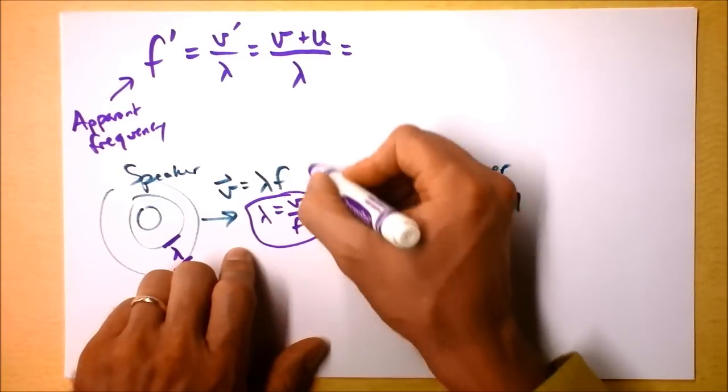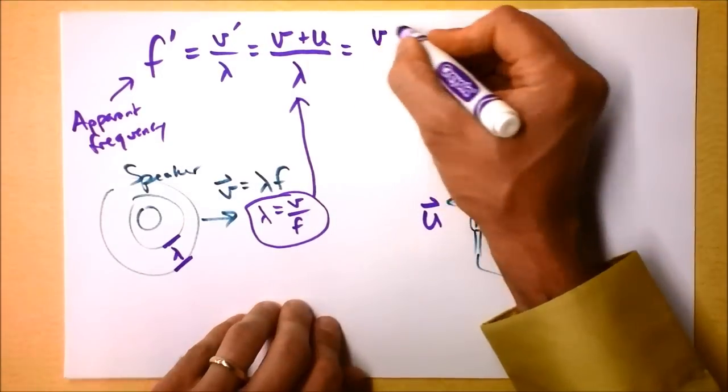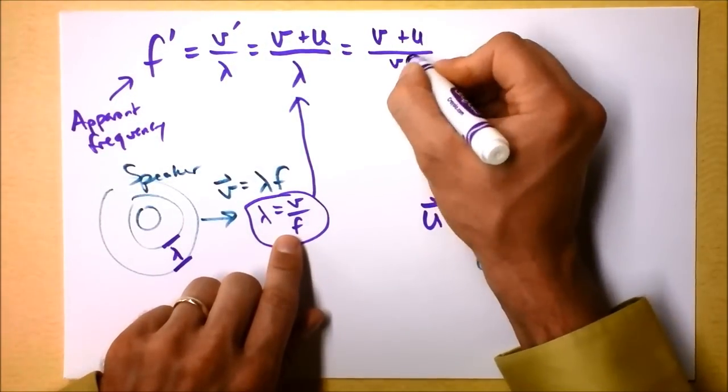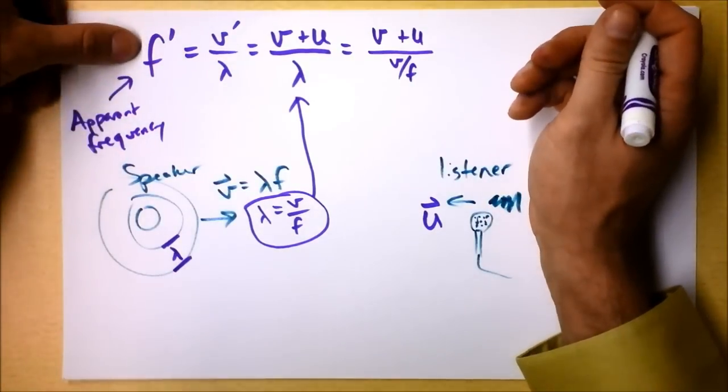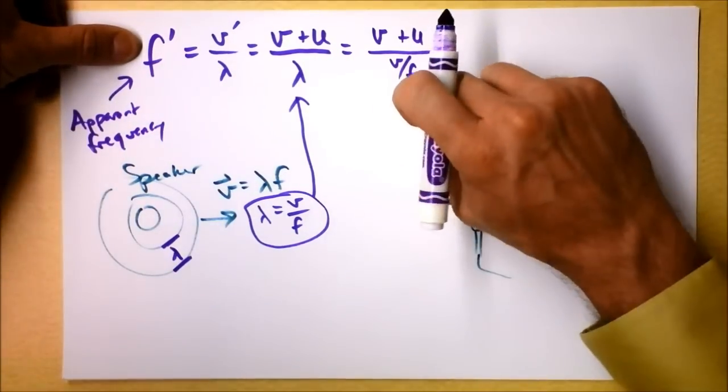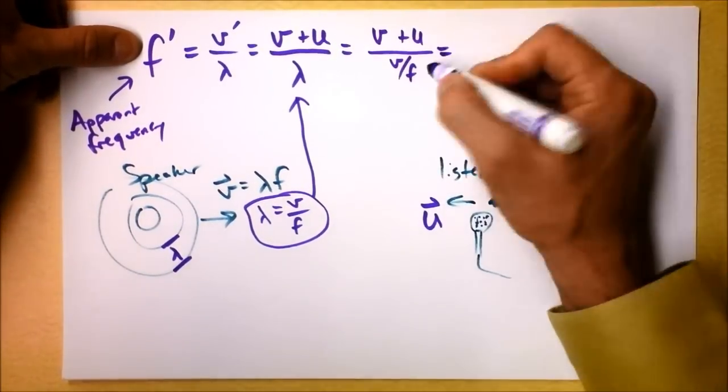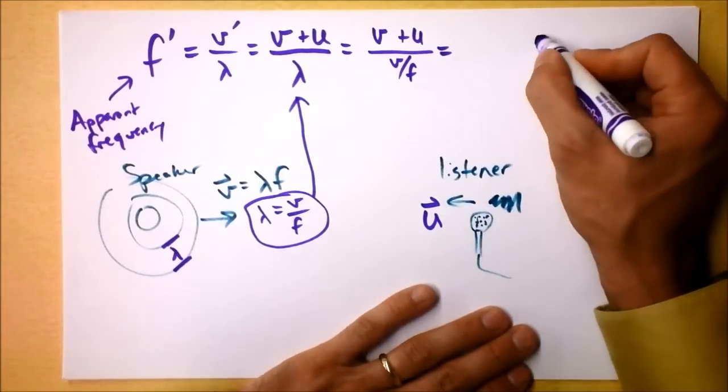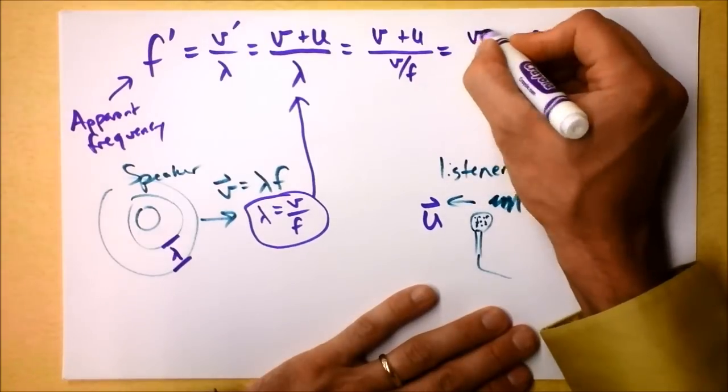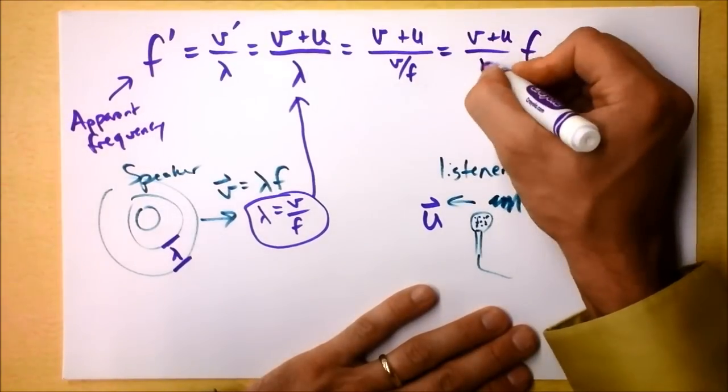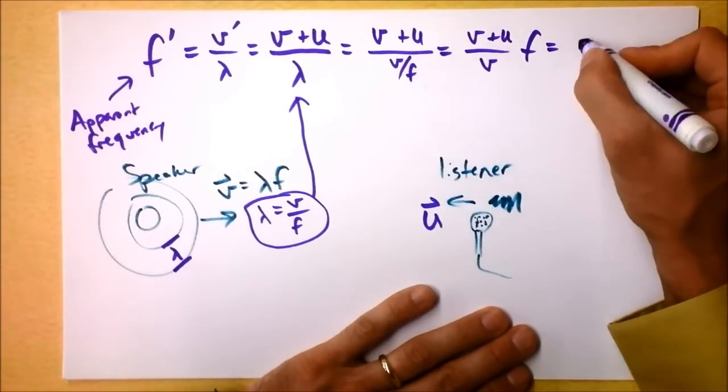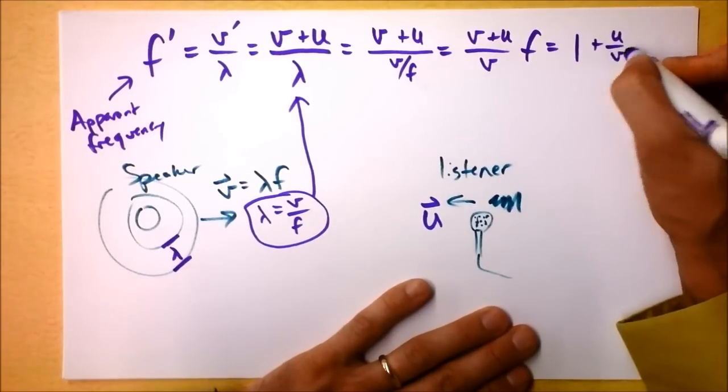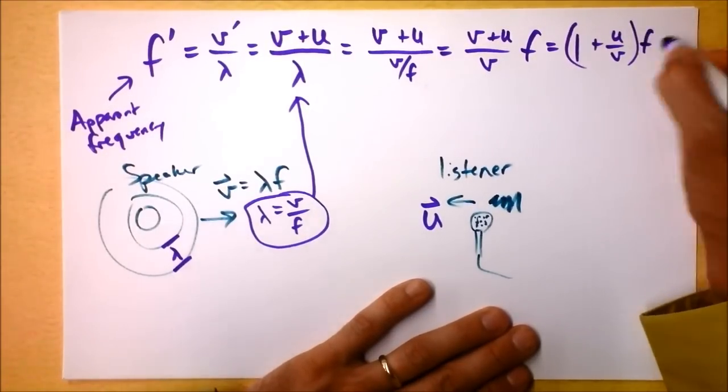And I'm going to plug this in up here. Watch this. I get V plus U divided by V over F. So now I'm getting the apparent frequency in terms of the original frequency. And this is the denominator of the denominator, so it comes out in the top. And this is V plus U divided by V. And that simplifies a tiny bit. I'm going to get one plus U over V times the frequency.